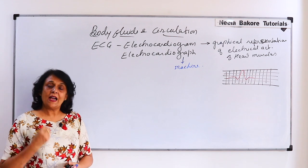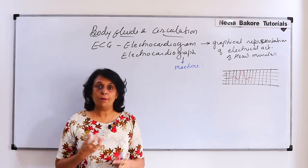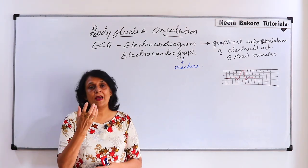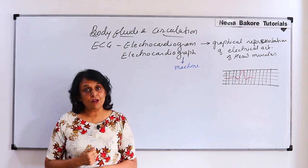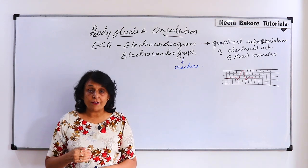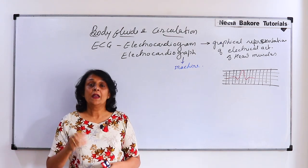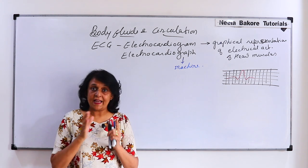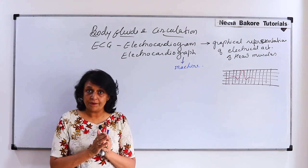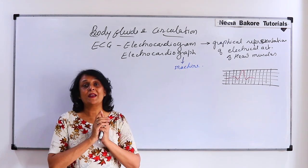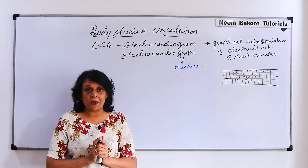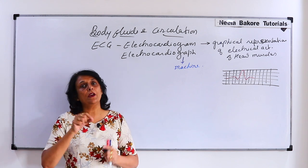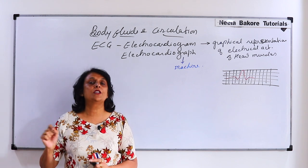Now in our heart, what electrical activity is happening? We contract our auricles and ventricles. For this, the impulse travels from the SA node, which is our natural pacemaker. So the impulse travels in the form of electrical charge.